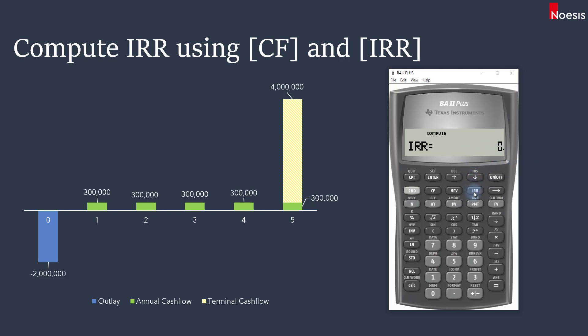Press IRR and then Compute. You get 26.77%, the same result obtained when computing IY using the TVM method. This confirms 26.77% as the internal rate of return of these cash flows.